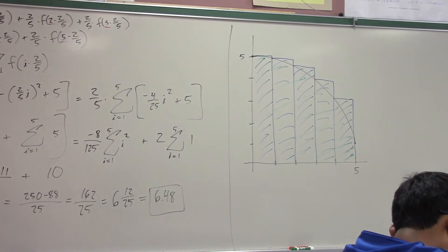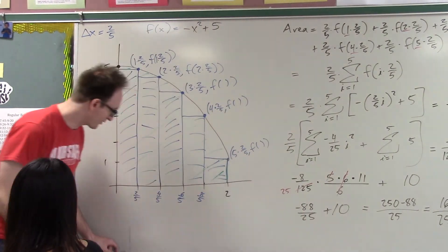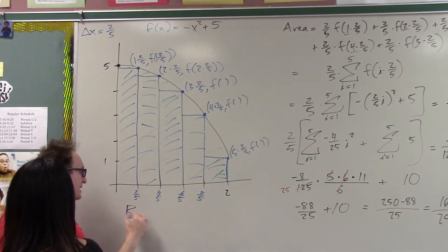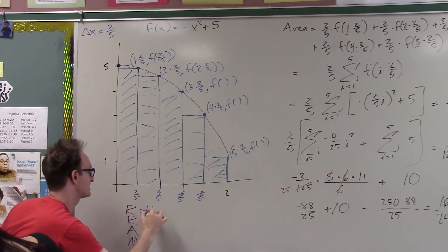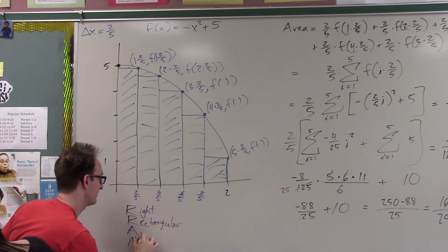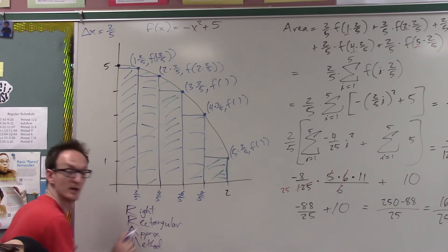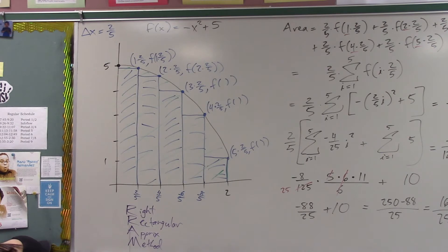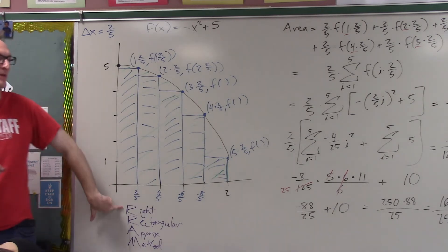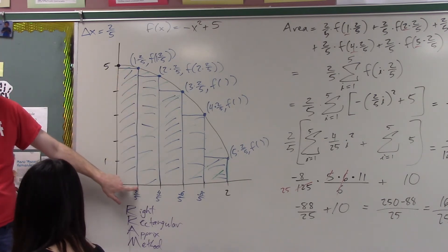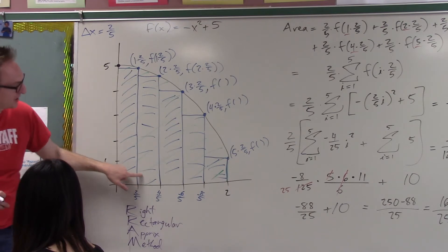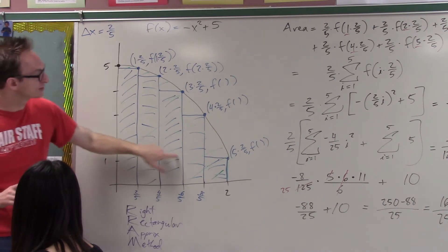Which point from each sub-interval do we choose over here? The last one, the right one. There's actually an infinite number of them on any sub-interval. This whole method that we're doing over here actually has a name. It is called RRAM. It is the right rectangular approximation method.